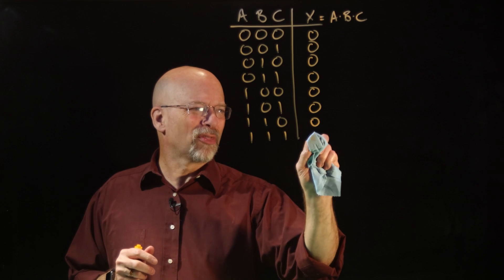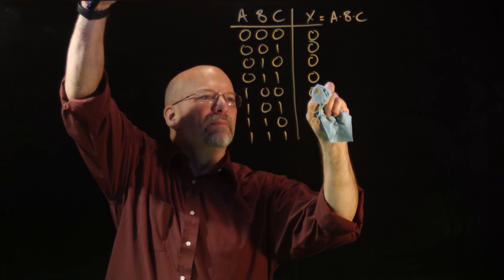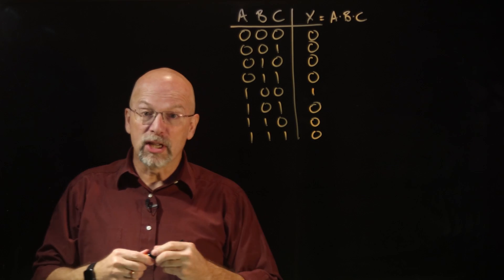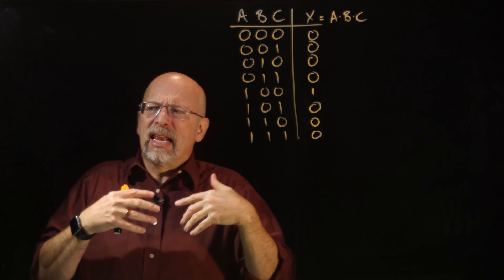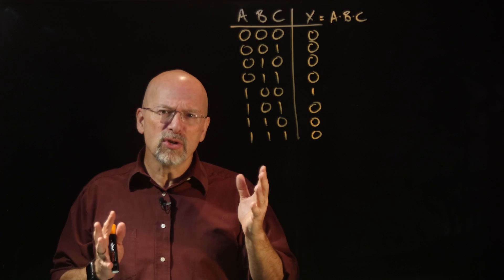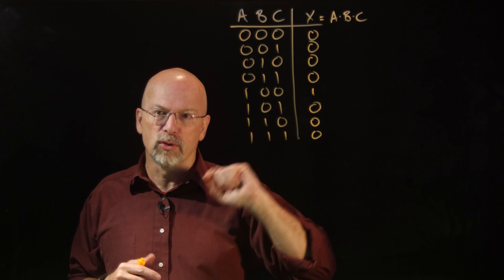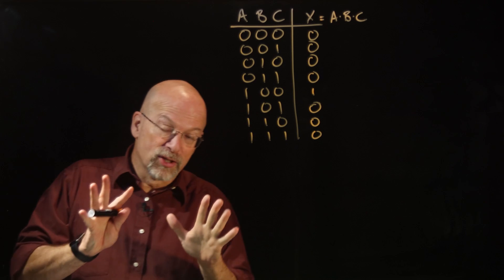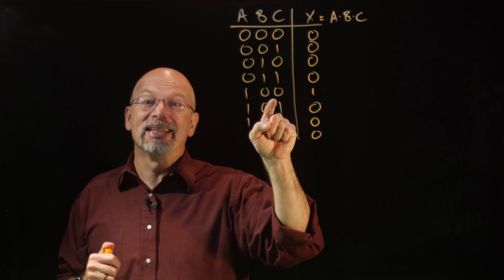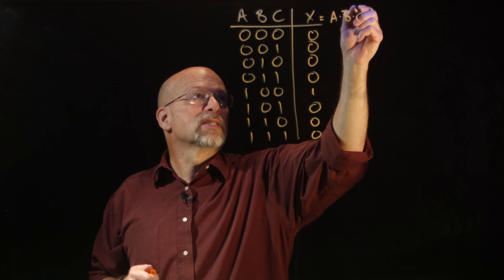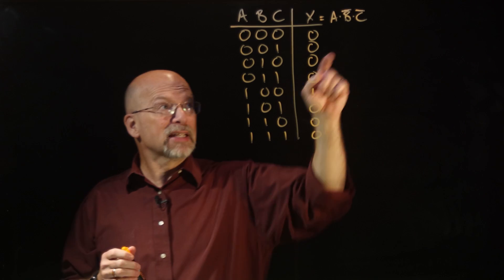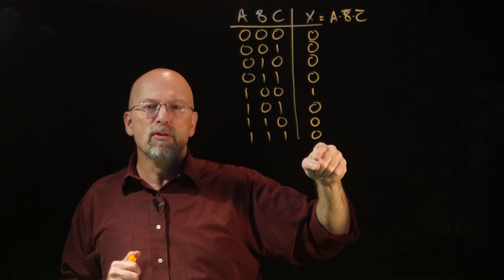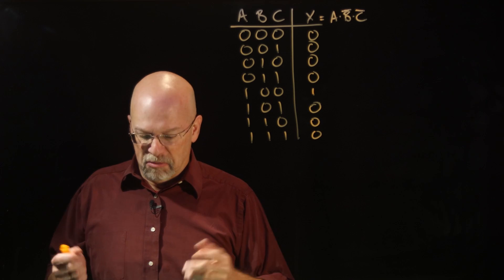What if this is not the row where we want that one output to be? Let's say we want it higher up — still one one output, right? If we say it out like a sentence, it still uses the word AND. What we want is to output a one if A is a one and B is a zero and C is a zero. Another way of saying that is: A is a one and B is not a one and C is not a one — so we simply invert B and C. By placing inverters on specific inputs to our AND gate, we can move that one to different locations.